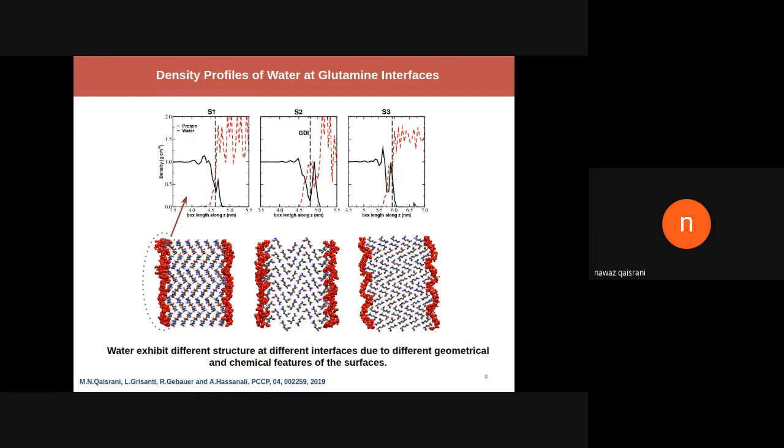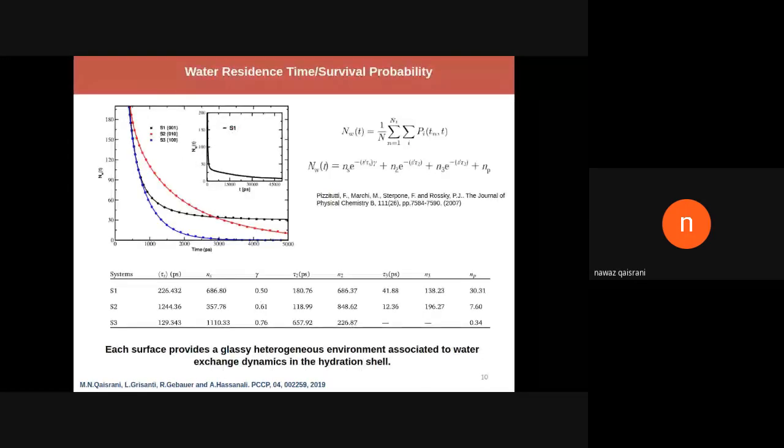Due to the different chemistry and features of each surface, water attains a completely different structure, which you can see from the density profiles. For example, surface 2 has a double layer of water at the interface, surface 3 has a sharp double layer shoulder, and surface 1 has a completely different structure. Similarly, the water exchange dynamics when in the hydration shell are also completely different and are slaved to the heterogeneous environment which the surface provides.